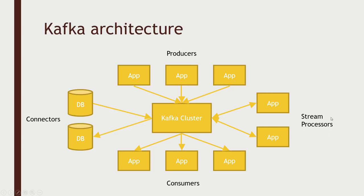One last thing you can do with Kafka is use stream processors, which transform data as it comes in. For example, a producer might be generating raw unstructured web log lines from a web server. A stream processor can listen for new log lines, extract the information you care about in a more succinct and structured format, and then republish that on a new topic back into Kafka. So you might have producers listening for new logs across an entire fleet of web servers, a stream processor extracting just the fields you care about, and then republishing to a new topic that goes to a database connector for persistent storage.